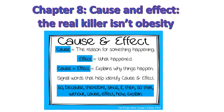So here I have a little definition of cause and effect. Cause: the reason for something. Effect: what happened. Cause and effect explains why things happen. Single words that help identify cause and effect include: because, therefore, since, if, then, so, that, without, cause, effect, how, and explain — all words that can be used when describing cause and effect.